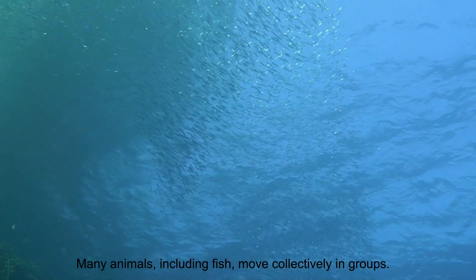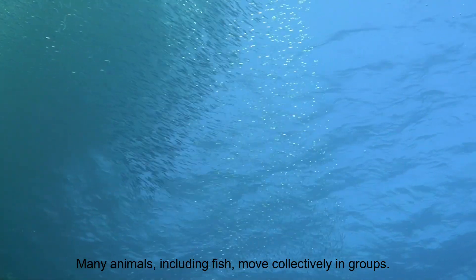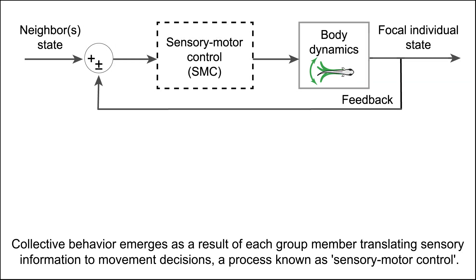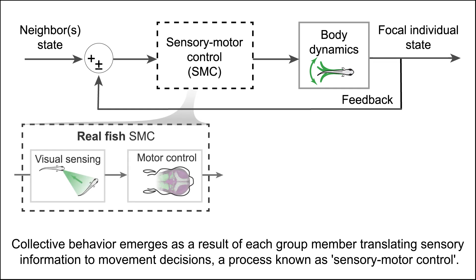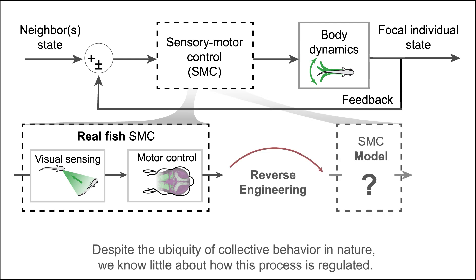Many animals, including fish, move collectively in groups. Collective behavior emerges as a result of each group member translating sensory information to movement decisions, a process known as sensory motor control. Despite the ubiquity of collective behavior in nature, we know little about how this process is regulated.